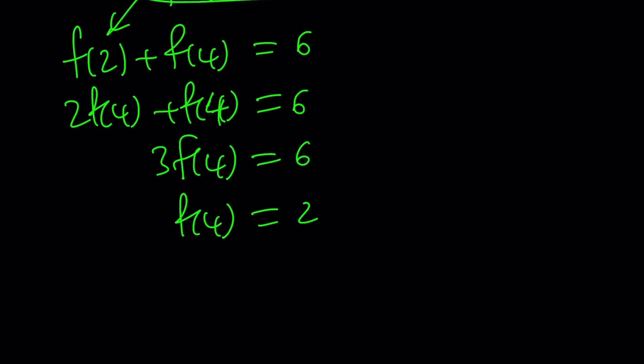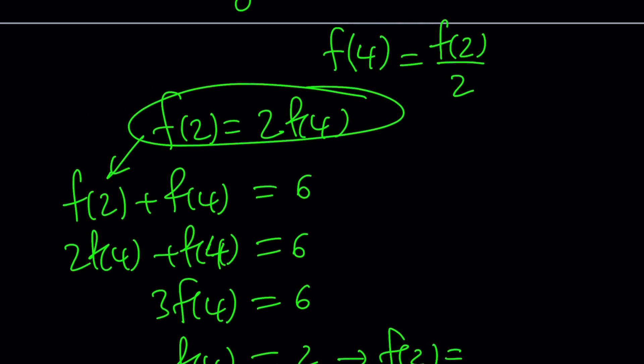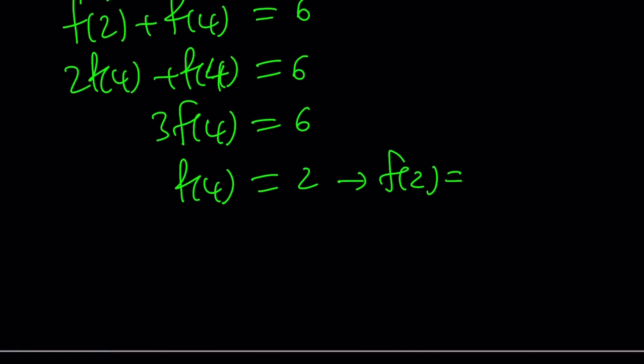Now I can go ahead and replace f(2) with this. So that is 2f(4) plus f(4) equals 6. And 2 apples plus 1 apple, that's 3 apples, equals 6. From here, f(4) is just going to be 2 if you divide both sides by 3. So I was able to find the value of f(4), but I wasn't looking for it. But that doesn't matter. You're going to need it. Do I need to find f(2) as well? Yeah, it would be nice. f(2) is 2 times f(4), so f(2) is just going to be 4. So it's kind of an interesting function. f(4) is 2, f(2) is 4. They kind of switch around.